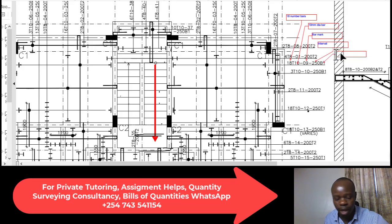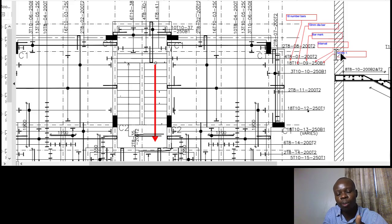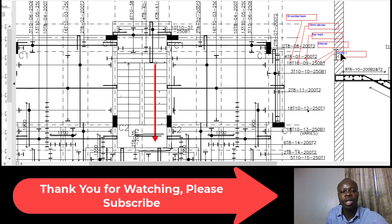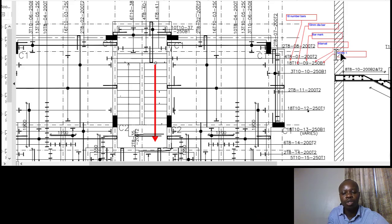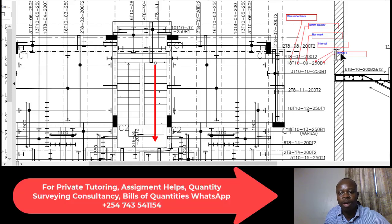B1 indicates 'bottom one.' There is normally a bottom one, bottom two, top one, and top two. At the bottom of the slab element, the first layer of reinforcement bar is called bottom one. The second layer, which in most cases runs in a different direction, is called bottom two. So in a slab the bars are indicated depending on the layer they occupy.